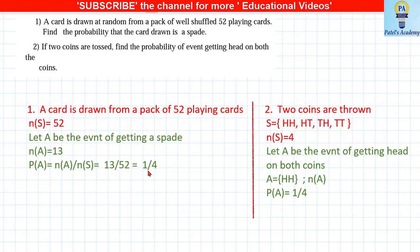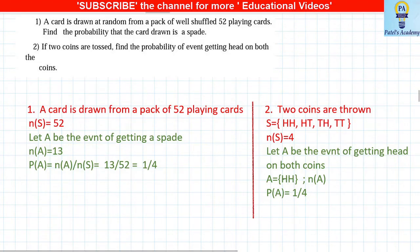Two coins are tossed; total outcomes are {HH, HT, TH, TT}, nS = 4. Find the probability of getting heads on both coins. Event A = {HH}, nA = 1. P(A) = 1/4.